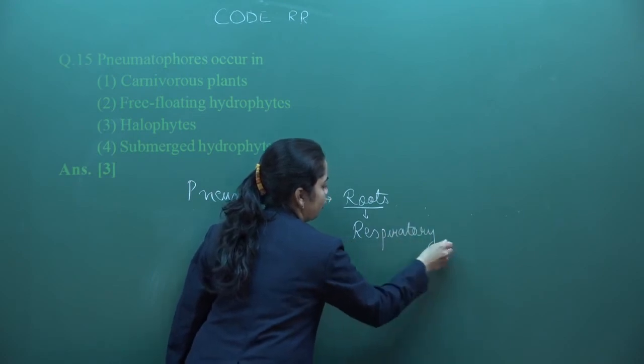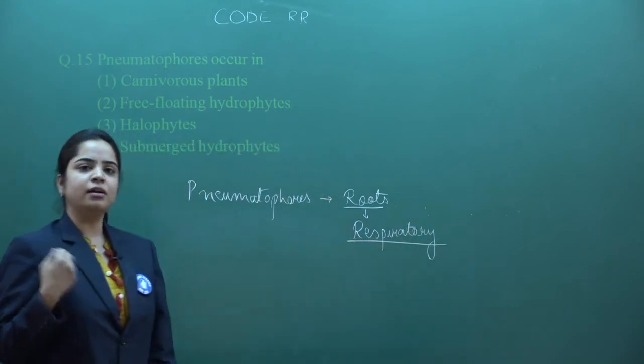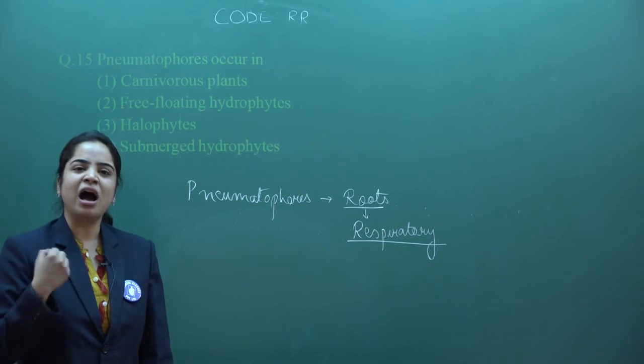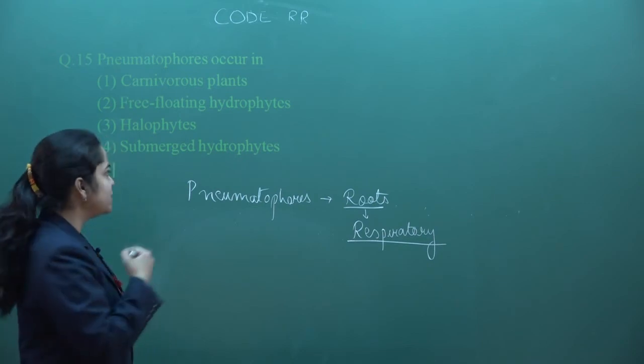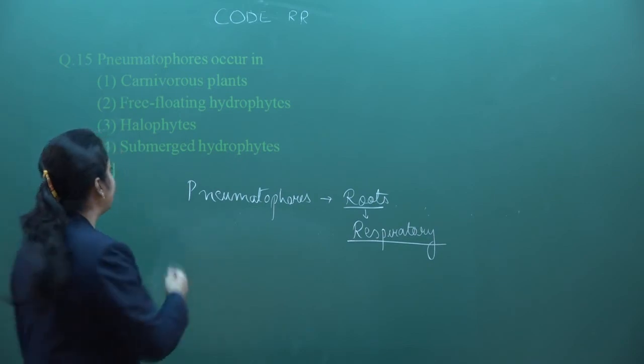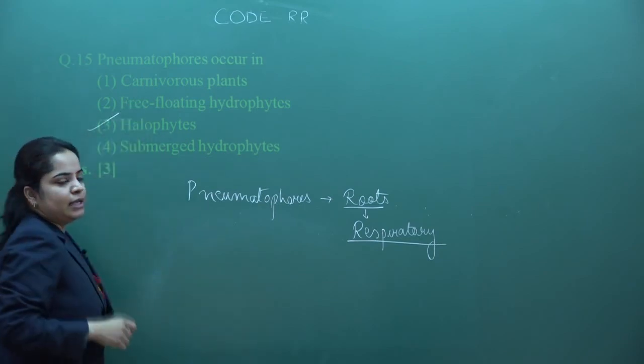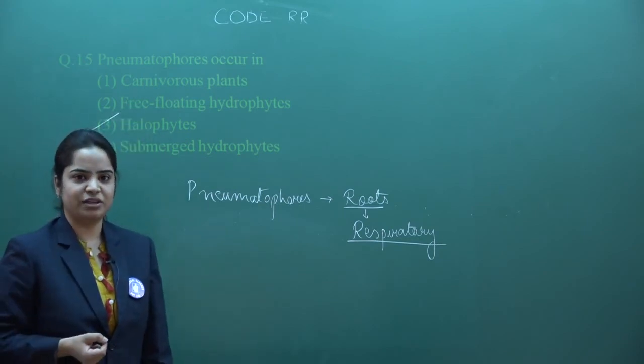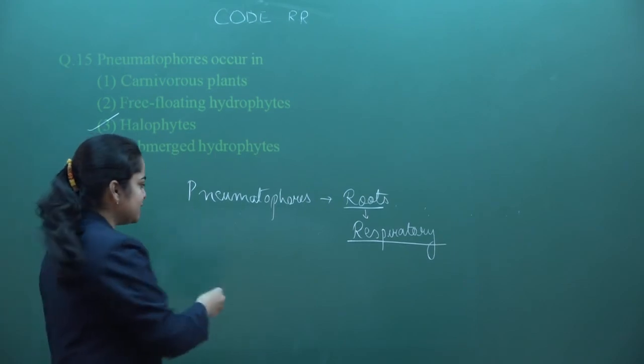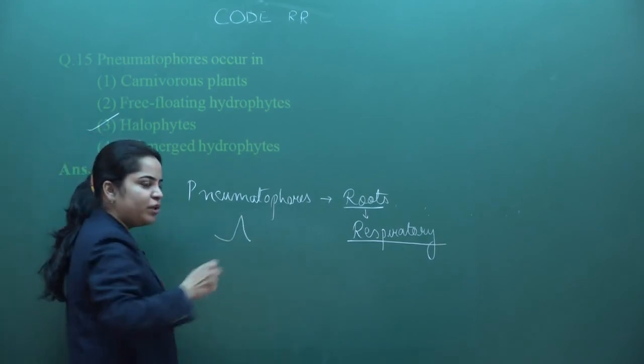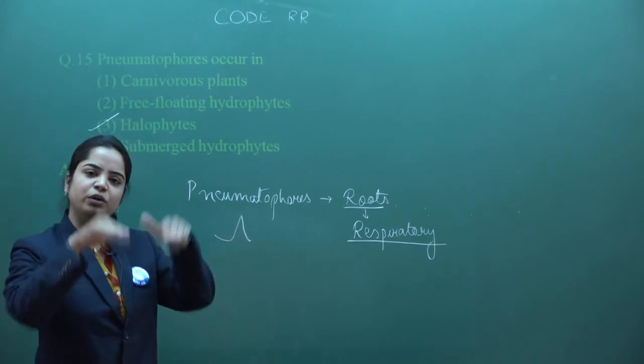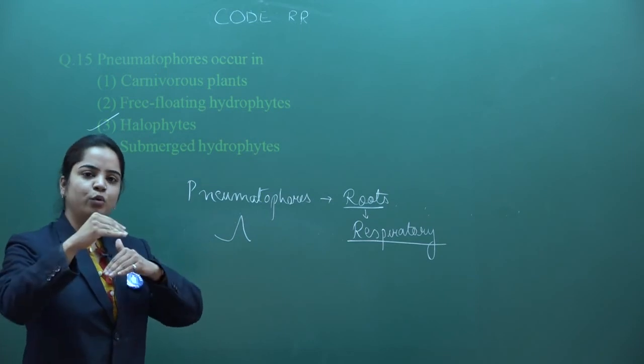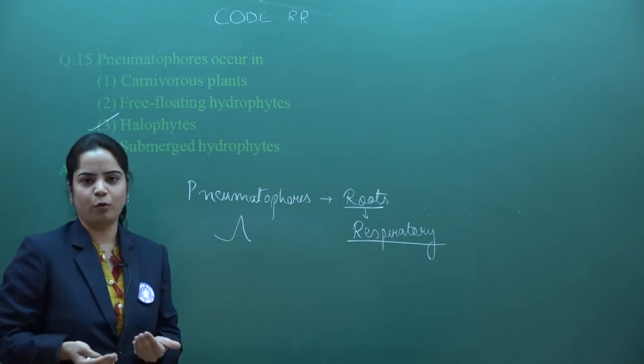They are found in those plants which are grown in high salt content. Plants which grow in high salt concentration are halophytes. These have these types of roots which are projecting above the ground level, above the water level. Why are they above? To gain oxygen from the environment.